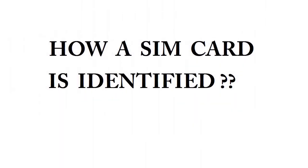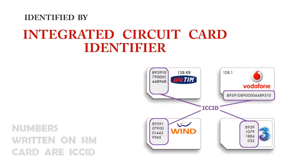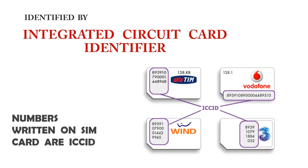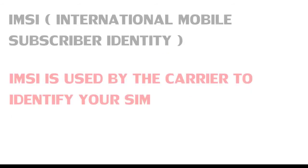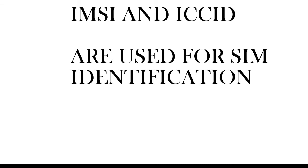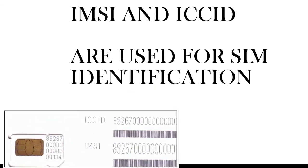A SIM card is internationally identified by its Integrated Circuit Card Identifier, which is engraved on the body of the card. It is also identified by the carrier with its International Mobile Subscriber Identity, or IMSI. Essentially, these two numbers tell the carrier that your phone is allowed to operate on its network and, once connected, should be billed for certain features.